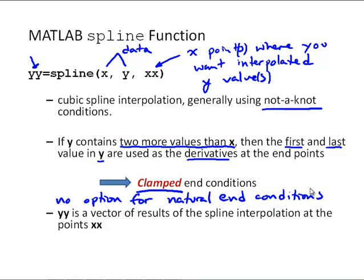So, again, that output yy is a vector of results of the spline interpolation at the points xx. Notice here we don't have an output of the spline coefficients.